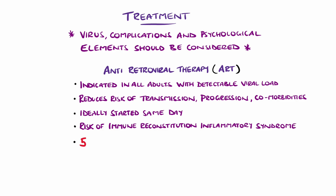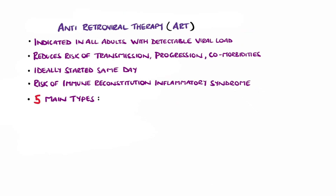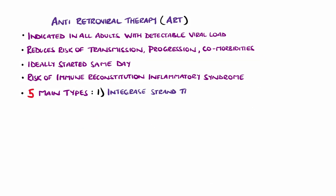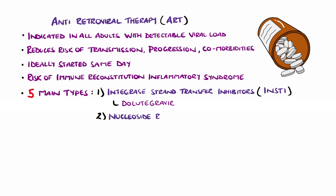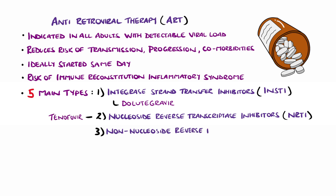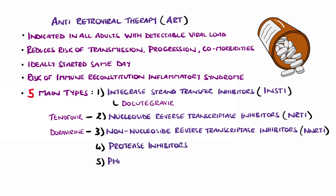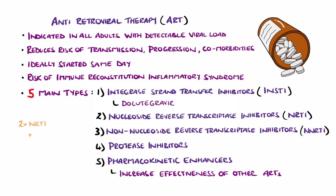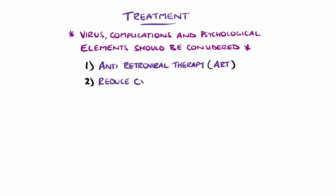ART medications are broken down into 5 main types: integrase strand transfer inhibitors (INSTIs) like dolutegravir; nucleoside reverse transcriptase inhibitors (NRTIs) like tenofovir; non-nucleoside reverse transcriptase inhibitors (NNRTIs) like doravirine; protease inhibitors; and pharmacokinetic enhancers, which increase the effectiveness of the other types. A typical first-line regimen includes two NRTIs and either an INSTI or an NNRTI. Once viral suppression has been achieved, statin therapy may be initiated to help reduce the associated cardiovascular risks.